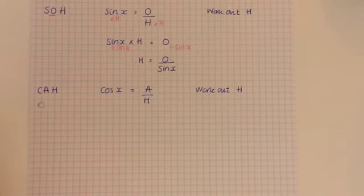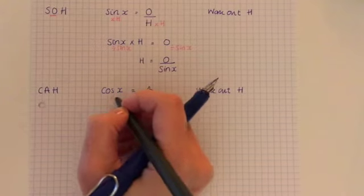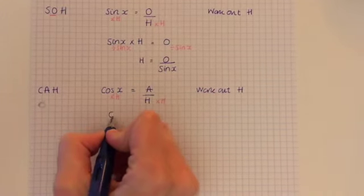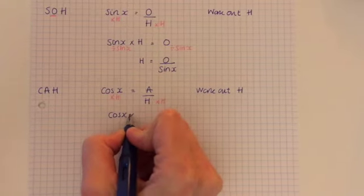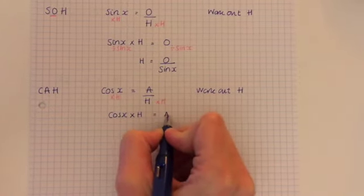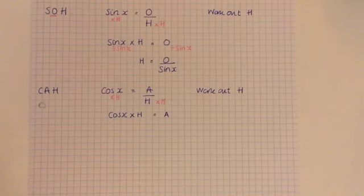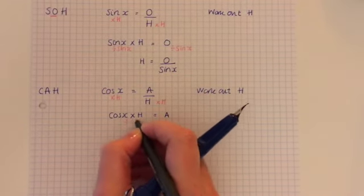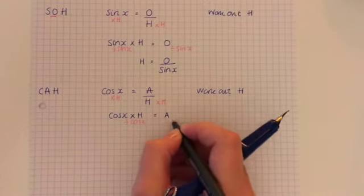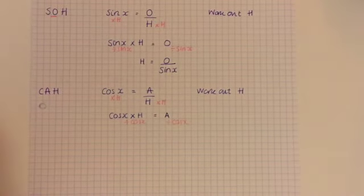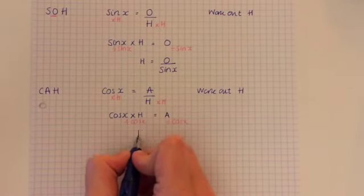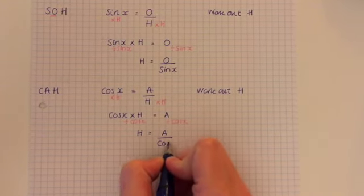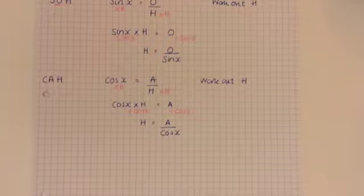So what we do is we multiply each side by H first of all. So I'm going to go through the process properly and it's only if you understand that you are allowed to do the cheat's way. And then to get H on its own, we divide each side by cos X. So this is going to help us for next lesson when we're working out the other sides.